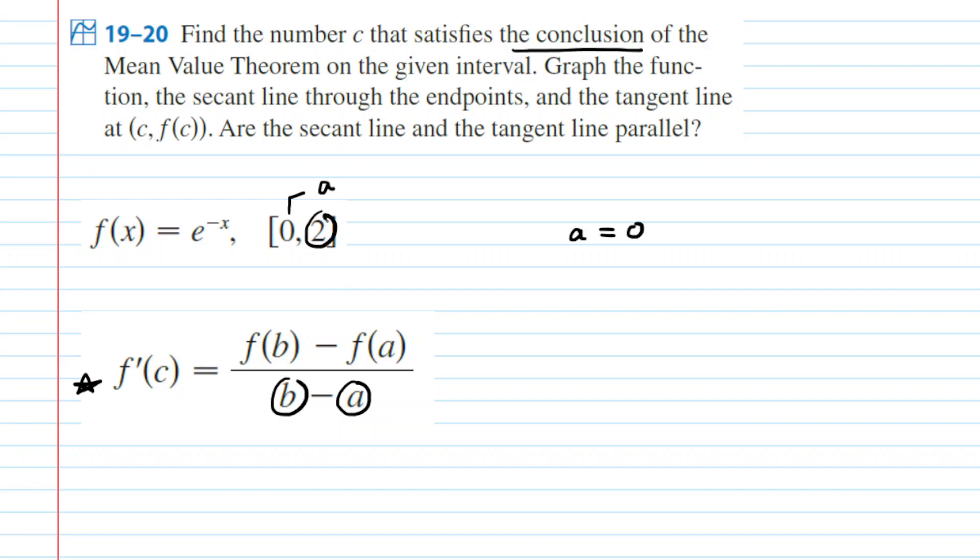b is going to be the rightmost point on your interval, so in this case the value of b is going to equal 2. Now moving on to f of a, that simply means we're going to plug our a value into the function, so in this case we're going to say f of a is the same thing as f of 0.